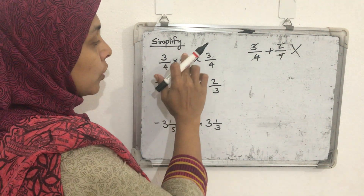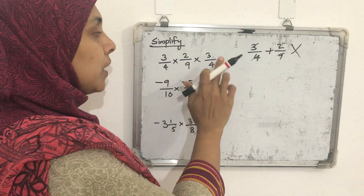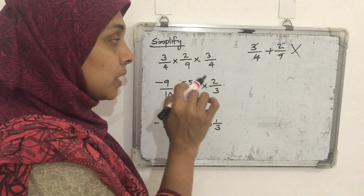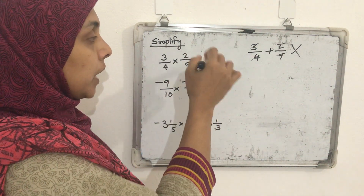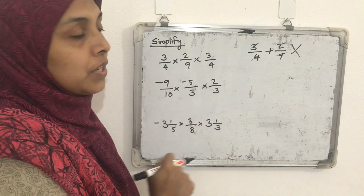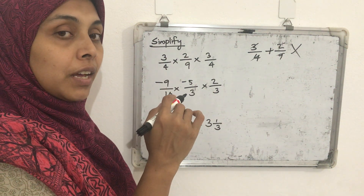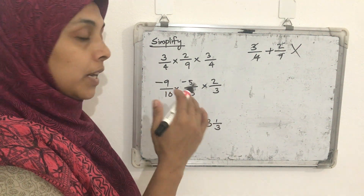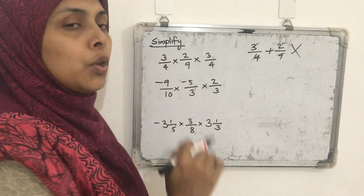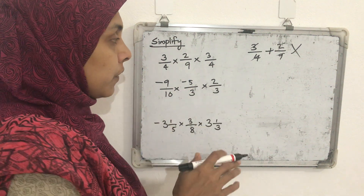Now with 3/4, 2/9, and 3/4, we are multiplying all three — no addition or subtraction. So we can use the shortcut cutting method. Cutting method means we are actually doing division; we are finding common factors of any numerator and denominator. Any numerator and any denominator we can check.